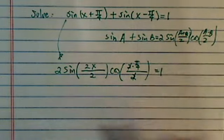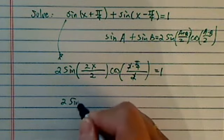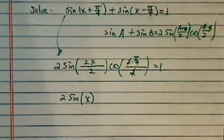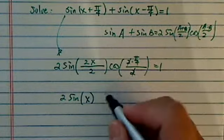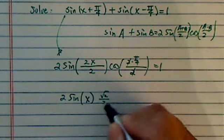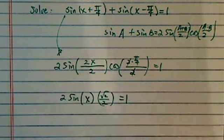This one cancels equal to 1. Then I have 2 sine of x, and cosine of pi over 4 is radical 2 over 2 equal to 1.